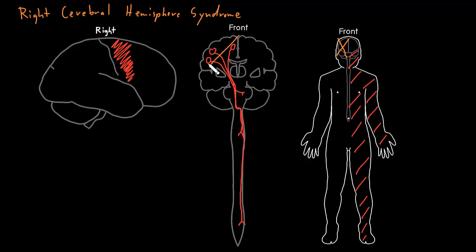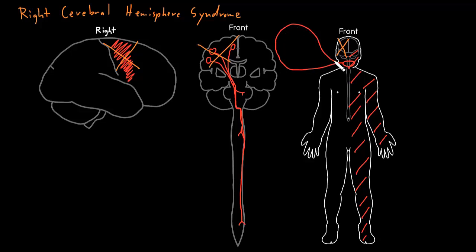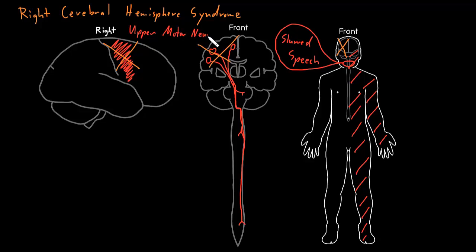With dysfunction of the right cerebral hemisphere, we're going to affect the input to all those lower motor neurons — or just the parts of the right cerebral hemisphere where those upper motor neurons come from. If the upper motor neurons are affected, we often see slurred speech as well, because the upper motor neurons are controlling some of the muscles involved in speech, like the muscles that move the lips.